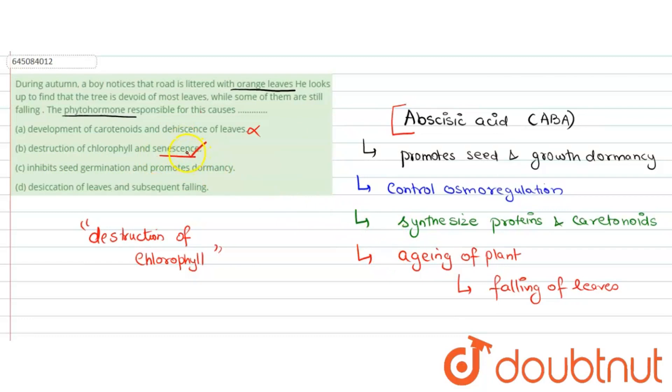Next, option C says it inhibits seed germination and promotes dormancy. This is the correct function for abscisic acid, but it is not correct for our question.